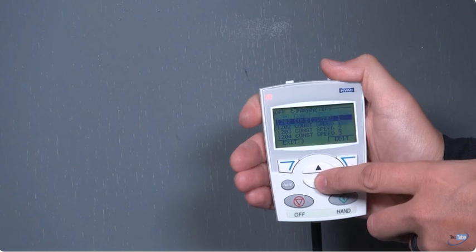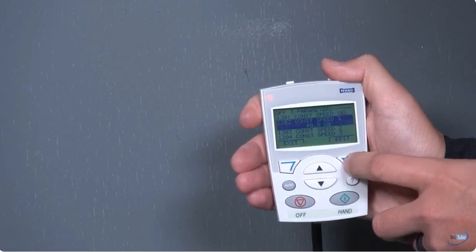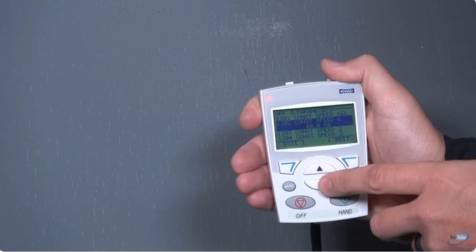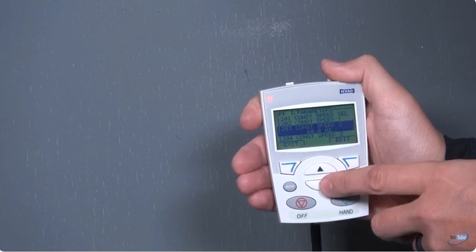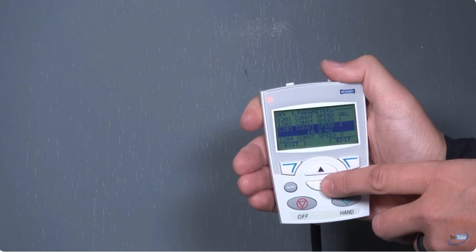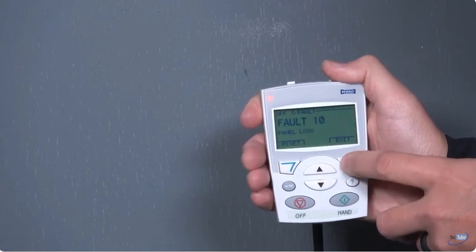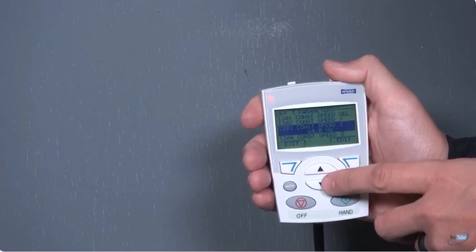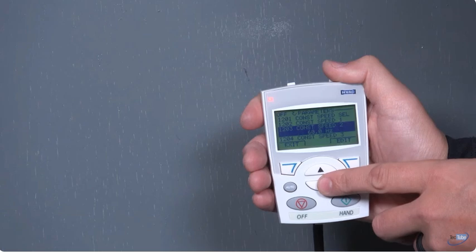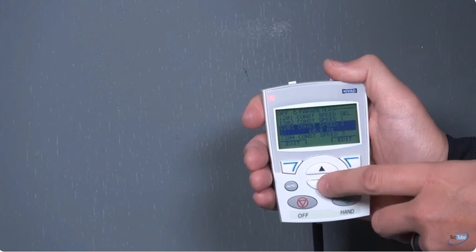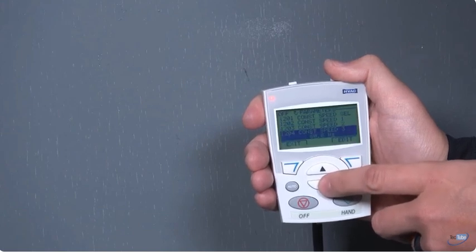It's a very important parameter to check. Once he's got that at 8, you hit the save button. Then we'll check our constant speeds. Constant speed 1202, that's going to be our low speed set at 40 hertz. That's going to be for Y1 or fan. 1203 we're going to set at 60 hertz, and that's going to be for Y2 call or any call for heat or dehumidification.